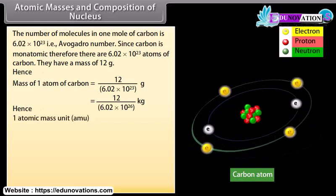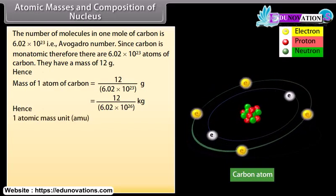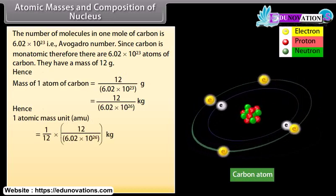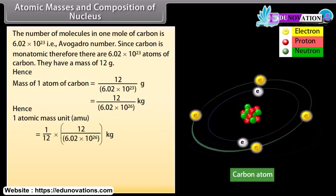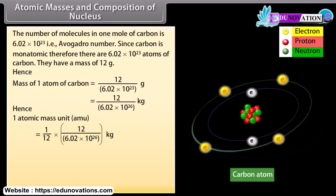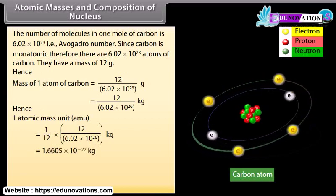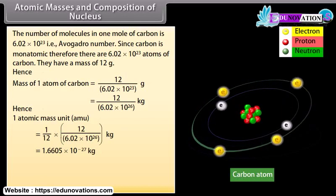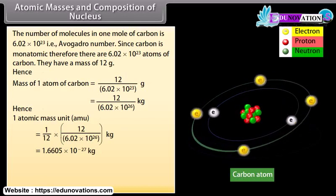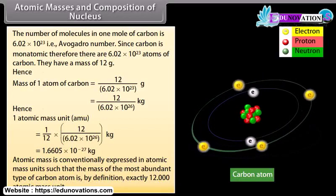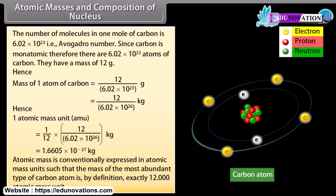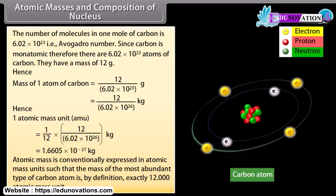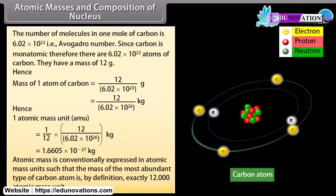Hence, 1 atomic mass unit is equal to (1/12) × 12 / (6.02 × 10²⁶) kilogram, which is equal to 1.6605 × 10⁻²⁷ kilogram. Atomic mass is conventionally expressed in atomic mass units such that the mass of the most abundant type of carbon atom is, by definition, exactly 12 atomic mass units.